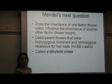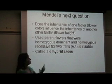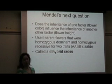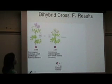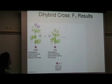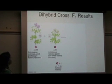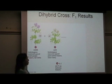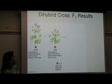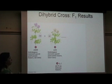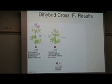The first cross is between two homozygous plants — one dominant and one recessive. We have a homozygous dominant parent plant that has purple flowers and is tall, and we cross that with a homozygous recessive plant that has white flowers and is short. Let's write their genotypes on the board and figure out what gametes they can make.